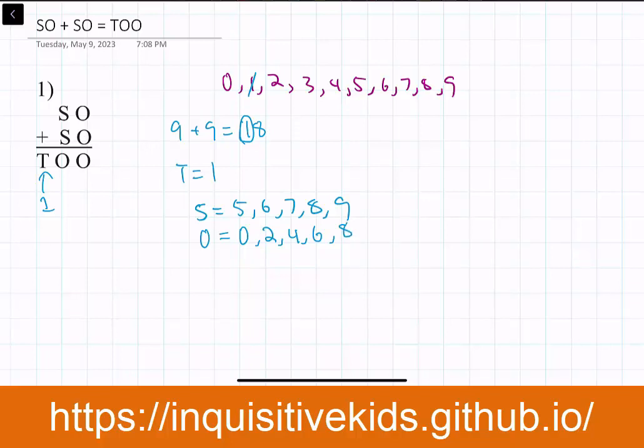Now, which of these pairs work out? If we have O equals eight, eight plus eight will equal six, not eight itself. Remember, every single digit represents only one number.